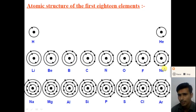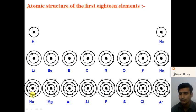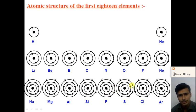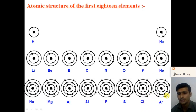Similarly, you can draw the atomic structure for sodium, which has atomic number 11. In sodium, the first orbit is completely filled with 2 electrons, the second orbit is completely filled with 8 electrons, and one electron is in the third orbit. For magnesium through argon, the first and second orbits are completely filled. In magnesium the third orbit has 2 electrons; aluminum = 3; silicon = 4; phosphorus = 5; sulfur = 6; chlorine = 7; and argon = 8 electrons in the third orbit. So in argon, all three orbits are completely filled.